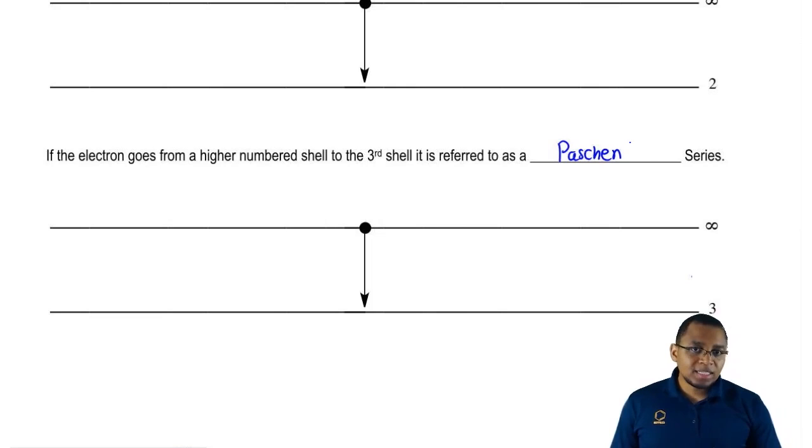Just remember the difference between absorption versus emission. And remember, we have different types of emission series depending on what level we fall back down to, whether it be level 1, shell 1, shell 2, or shell 3. They each have different names to them, and they all have different energies because we're releasing energy. Depending on where you fall, you're releasing different quantities of energy.